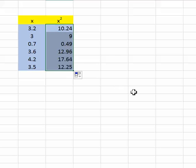I'll just do it really fast. So this is 3 squared, 0.7 squared, 3.6 squared, and so on.